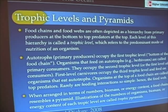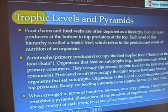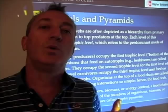First-level carnivores occupy the third trophic level. I know this gets a little bit confusing talking about first and third and all those different things, but as long as you keep track of who's eating whom and what role they play, you'll be able to keep it straight. When we arrange organisms in terms of their numbers, biomass, or energy content, we can convert a food chain or food web into what's called a trophic pyramid.